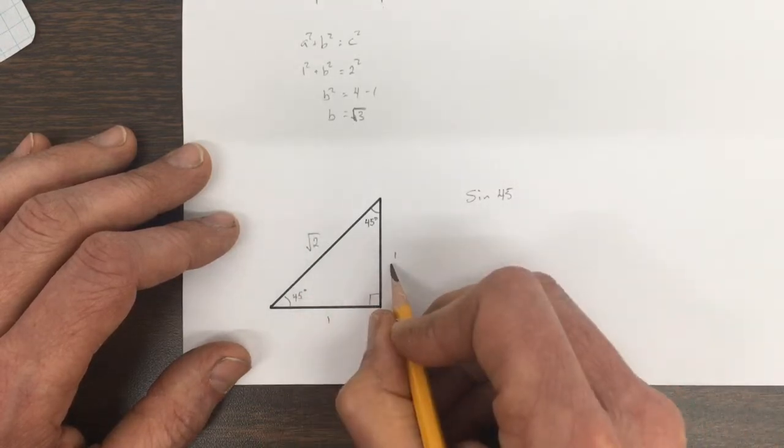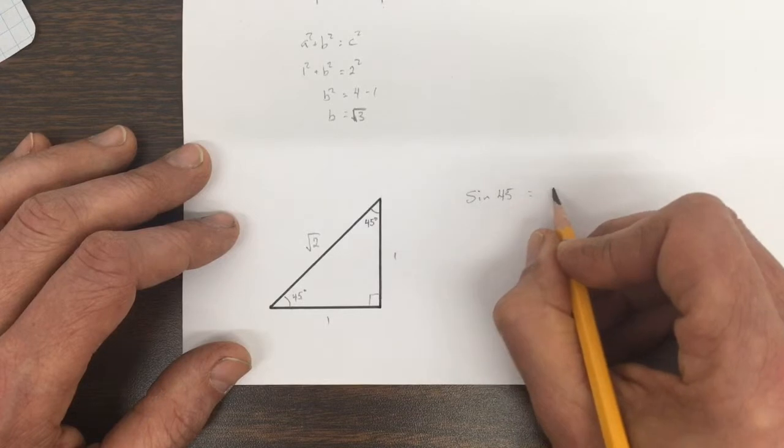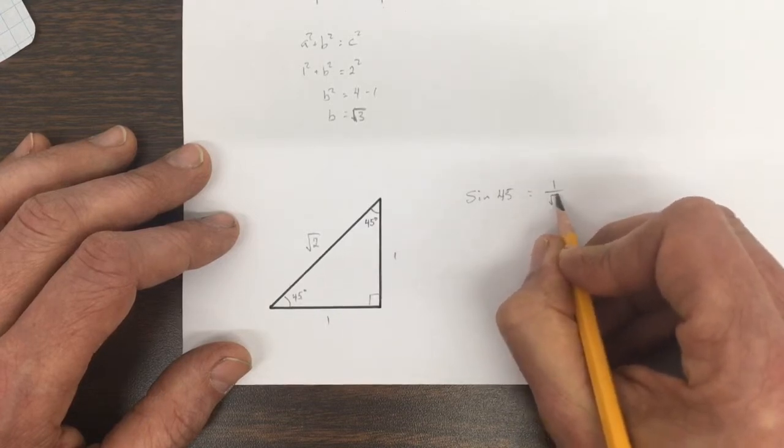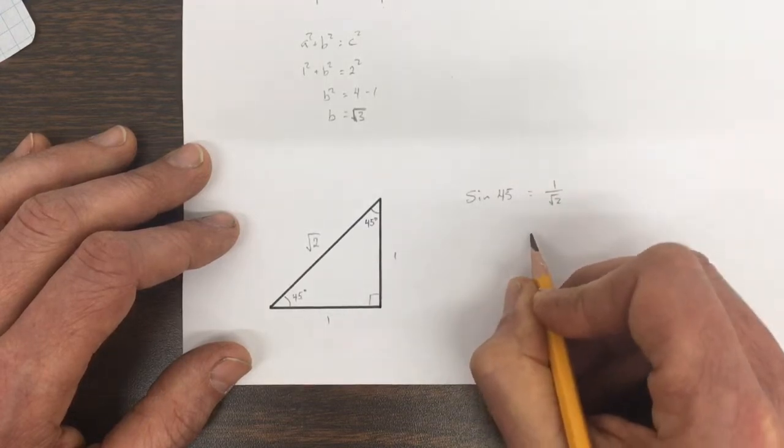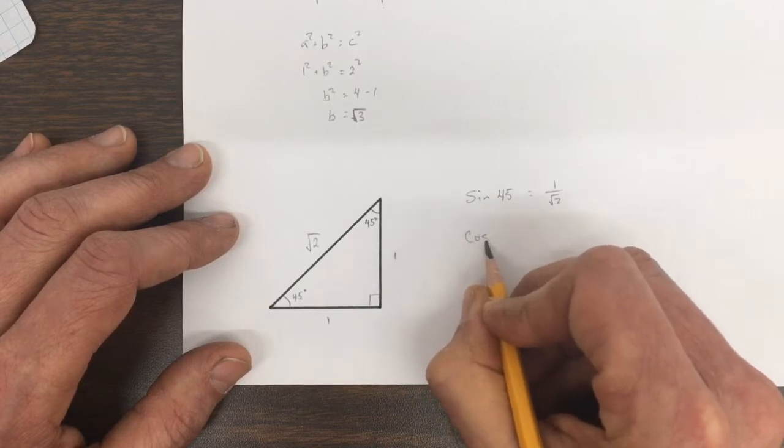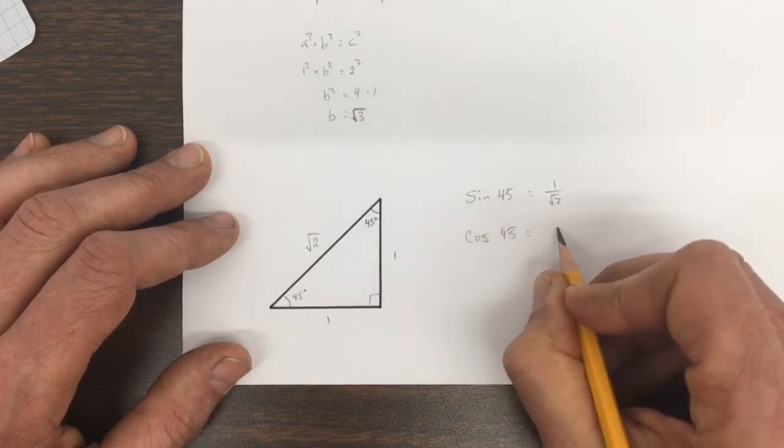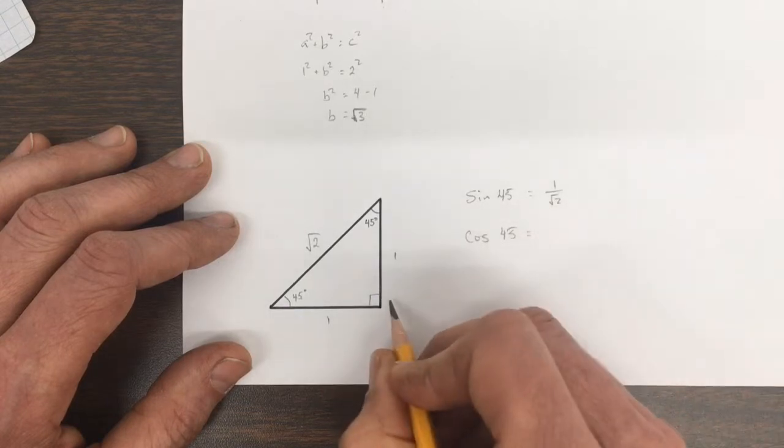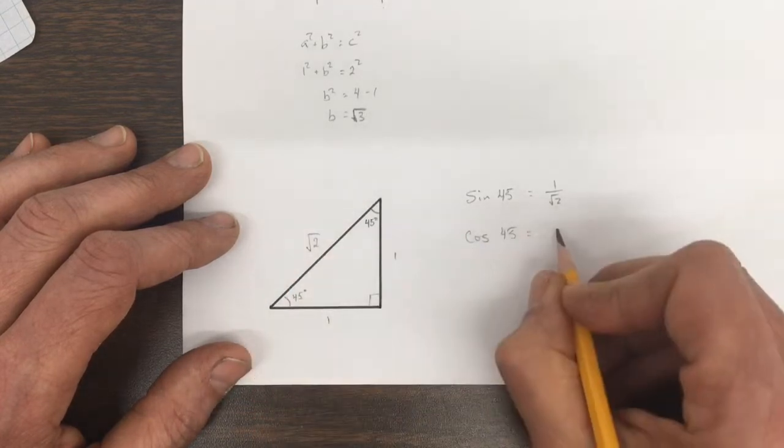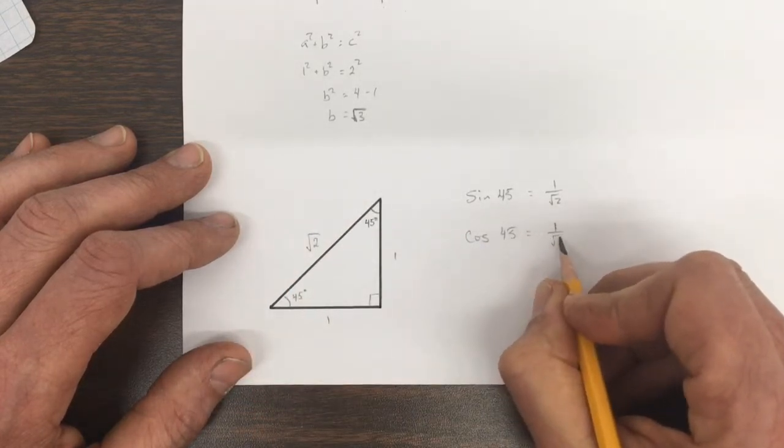So sine of 45, opposite over hypotenuse, equals 1 over root 2. Cos of 45 equals adjacent over hypotenuse, 1 over root 2.